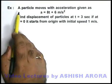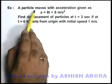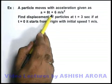In this example, we are given a particle which moves with acceleration given as 8t + 6 meters per second square.